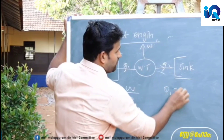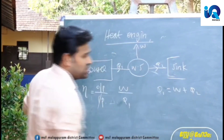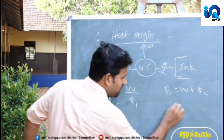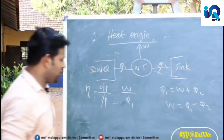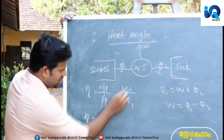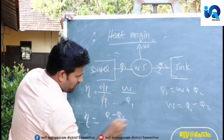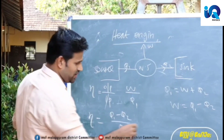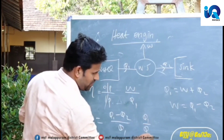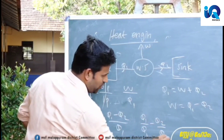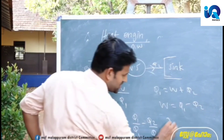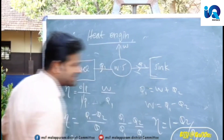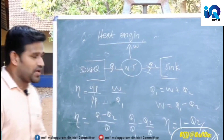Q1 is equal to W plus Q2. Then we write W equal to Q1 minus Q2. Then efficiency equals W by Q1, which is Q1 minus Q2 by Q1. Then efficiency equals 1 minus Q2 by Q1. This is the heat engine efficiency.